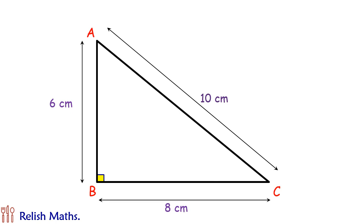We have to inscribe a biggest possible square in the triangle. Let us name the square as DEFG.